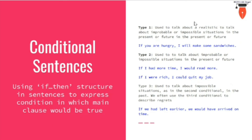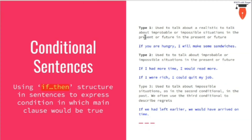Let us talk about the last type of sentences in this video — conditional sentences. Conditional sentences use an if-then structure and are very important when connecting hypothetical scenarios. If something happens, then something else would happen. In the first type, the if clause has simple present construction and the then clause has simple future construction. For example: 'If you are hungry, I will make some sandwiches.' Another example: 'If it rains, we will get wet.' So if something happens in the present, this will be the implication in the future.